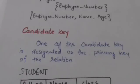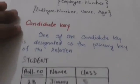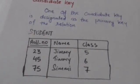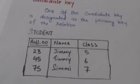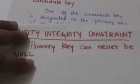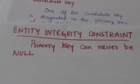The primary key is the candidate key whose values are used to identify tuples in the relation. We use the convention that the attributes that form the primary key of a relation schema are underlined. There is a constraint called entity integrity constraint,